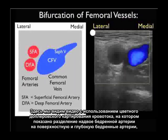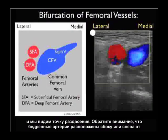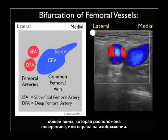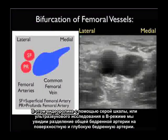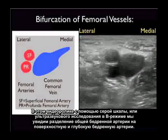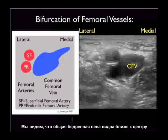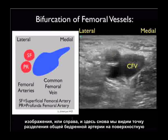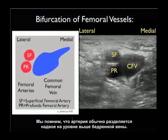Here we see a video clip using color flow Doppler demonstrating the bifurcation of the femoral artery into the superficial and deep femoral arteries. The femoral arteries are located laterally, towards the left of the common femoral vein which is seen medially. In B-mode sonography we can also note this bifurcation point of the common femoral artery into the superficial and profundus femoral arteries, remembering that the artery generally bifurcates at a level higher than the femoral vein.